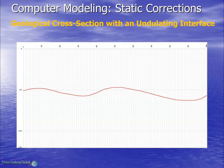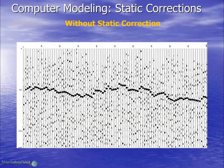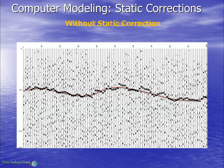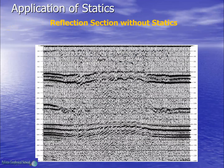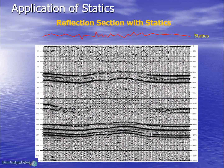To understand the effect of statics we have generated a computer model of a geological cross section. Without the application of statics the seismic image will not provide the precise geometry of the reflector as shown by the red line. But after the application of statics we will get a clear interpretable image of the reflector. This is a real seismic section without statics — we can see discontinuity and distortions in the middle portion of the reflectors. But after application of statics we get a much better subsurface image. In this way we have seen that statics are an important aspect of seismic imaging and must be applied to seismic data to get continuity of the reflectors.